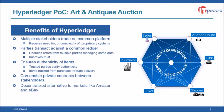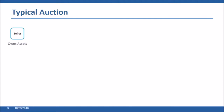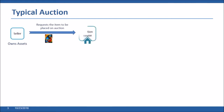Ultimately this could be a decentralized alternative to markets like Amazon and eBay. We built one basic auction scenario where a seller who owns assets desires to place an item on auction, and they might communicate with one or more auction houses. The auction house could evaluate the item, authenticate it, determine a valuation, and accept the item and decide to put it on auction for the seller.